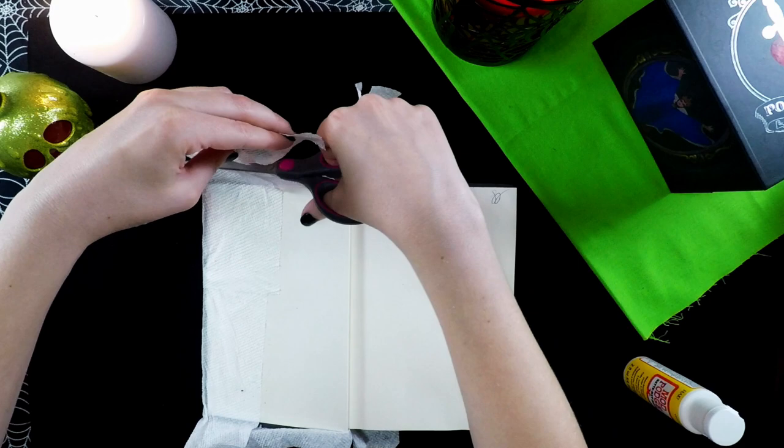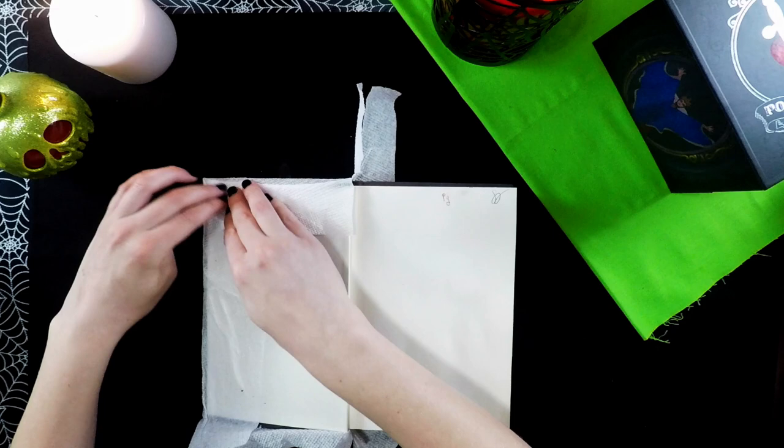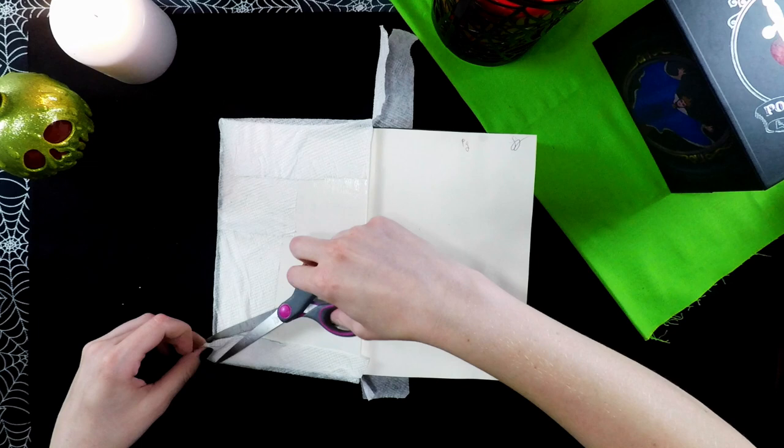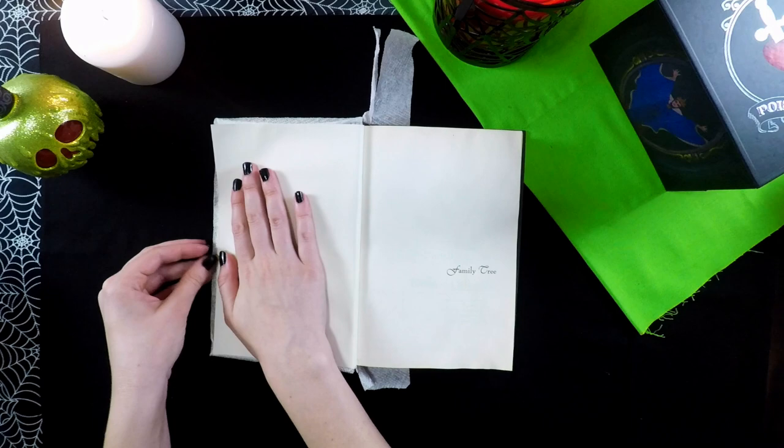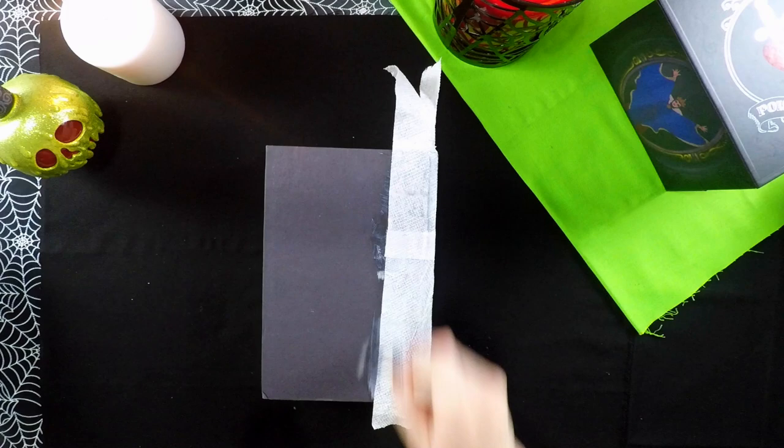To make things a little easier, trim off any excess paper towel you don't need. Once those have all been glued down I'm taking another layer of Mod Podge on the first page and I'm going to glue that to the front cover of the book so it makes it have a little bit more of a clean finish.